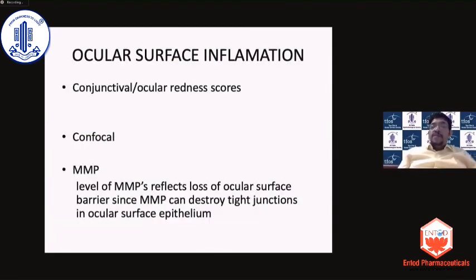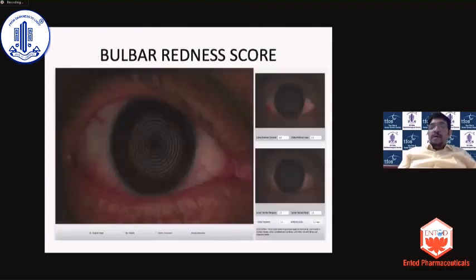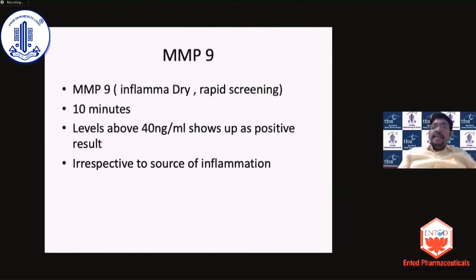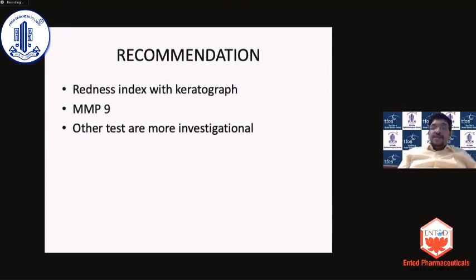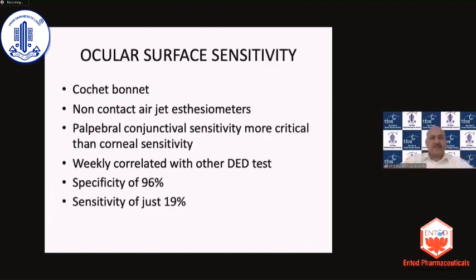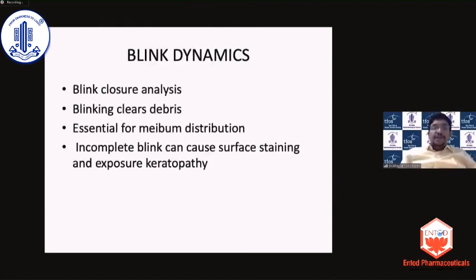Other investigational tools include redness scores for follow-up, and confocal microscopy which can reveal increased inflammatory cells in the epithelium and anterior corneal stroma, as well as squamous metaplasia, nerve changes, and conjunctival goblet cells. Available kits like MMP9 kits can also be used, though these are non-specific markers of inflammation and not specific to dry eye. At this point these are only investigational tools. Corneal sensitivity helps us understand the discrepancy between symptoms and signs, and blink dynamics — especially incomplete blinks — can cause surface staining and exposure keratopathy.